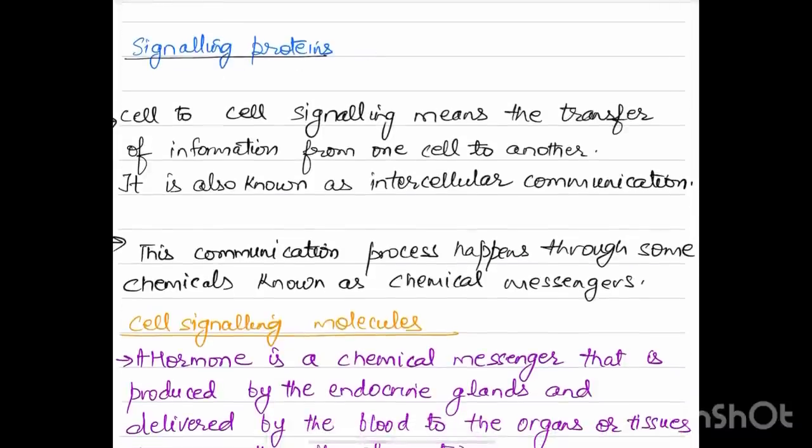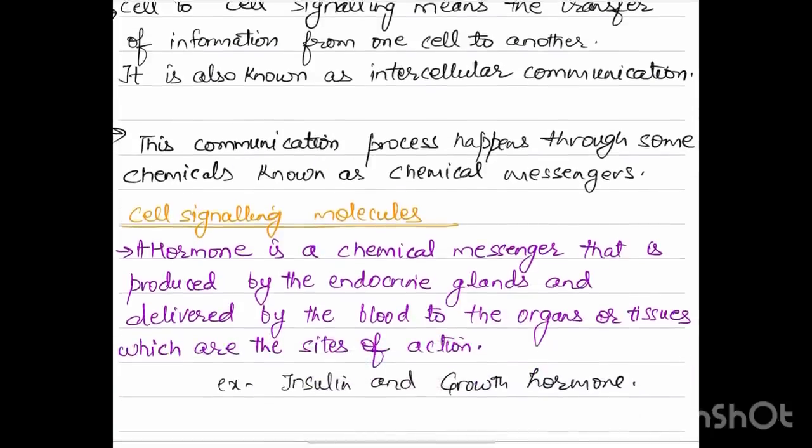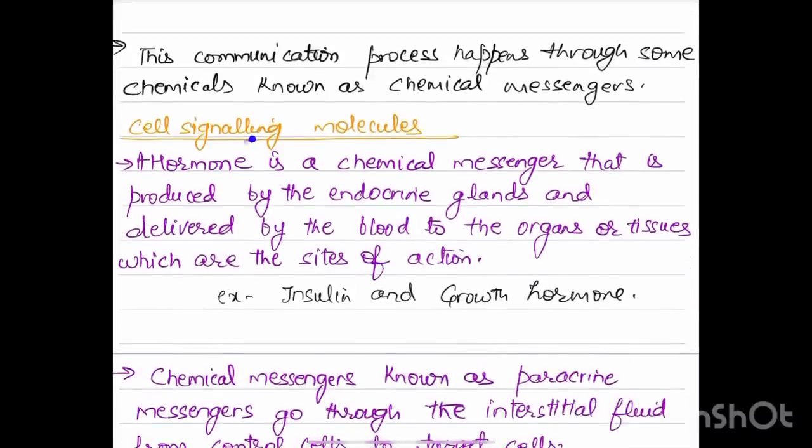Next we have signaling proteins. Cell-to-cell signaling means the transfer of information from one cell to another and is also known as intercellular communication. This type of communication process happens through some chemicals known as chemical messengers. In cell signaling molecules, usually a hormone is a chemical messenger produced by the endocrine glands and delivered by the blood to the organs or tissues which are the sites of action, for example insulin, growth hormone.